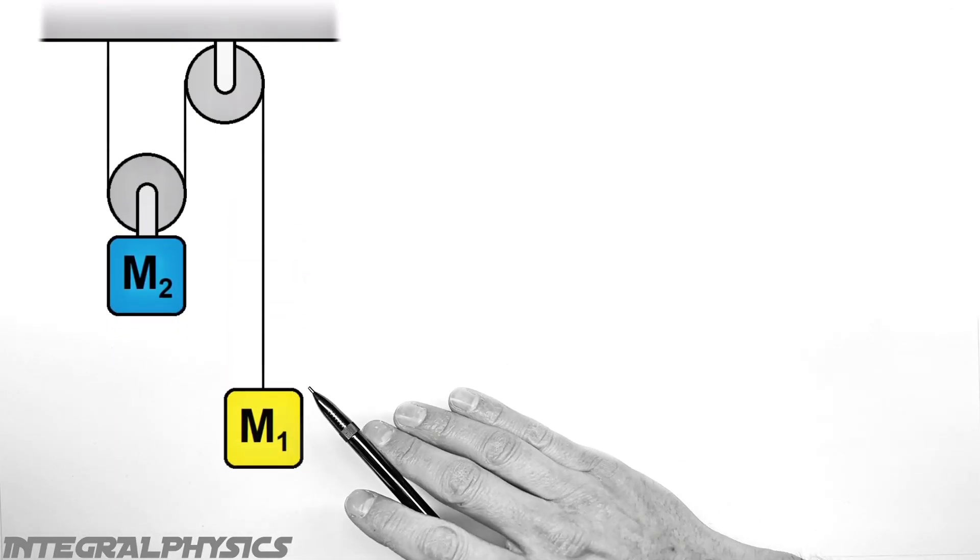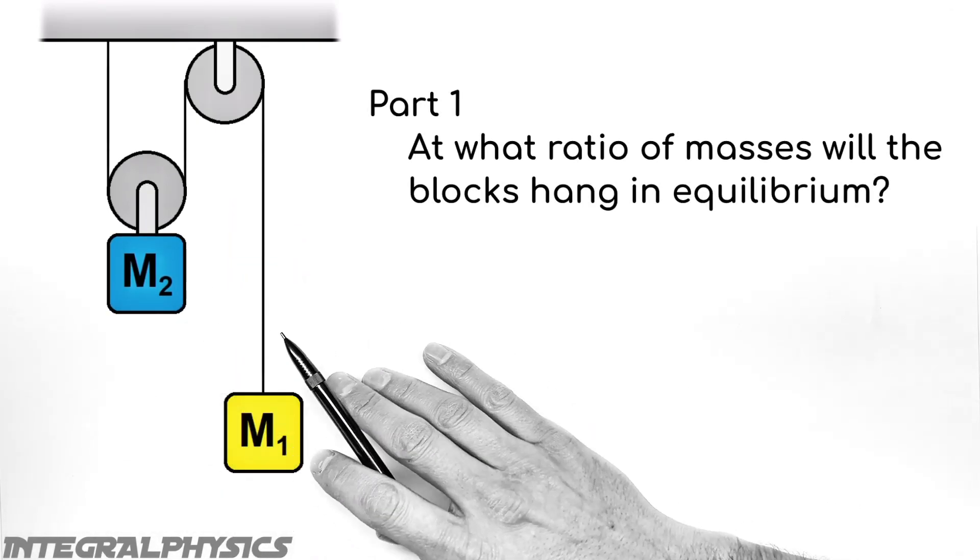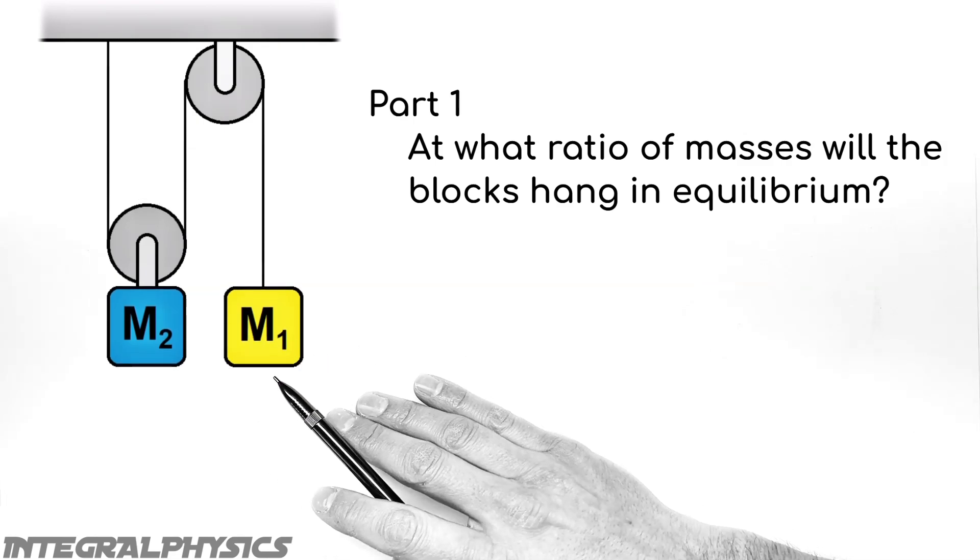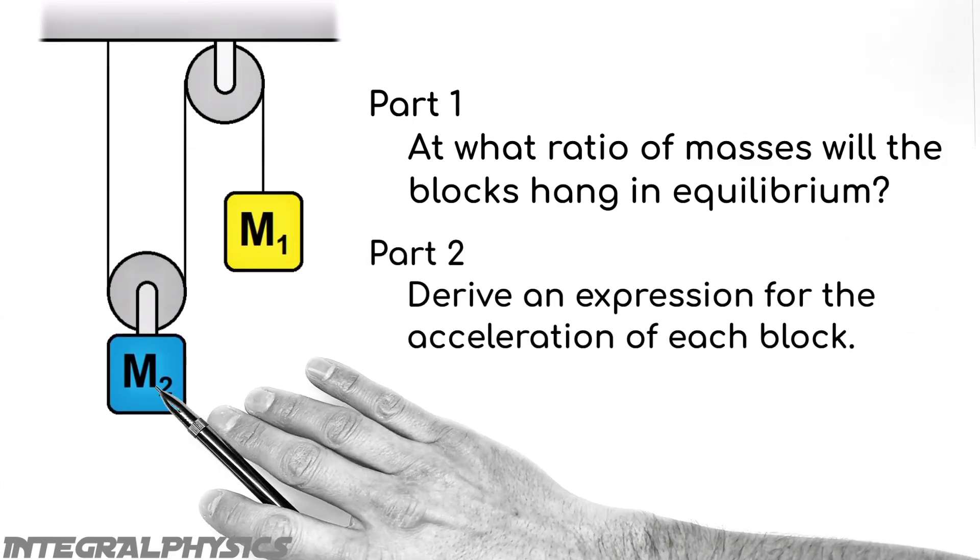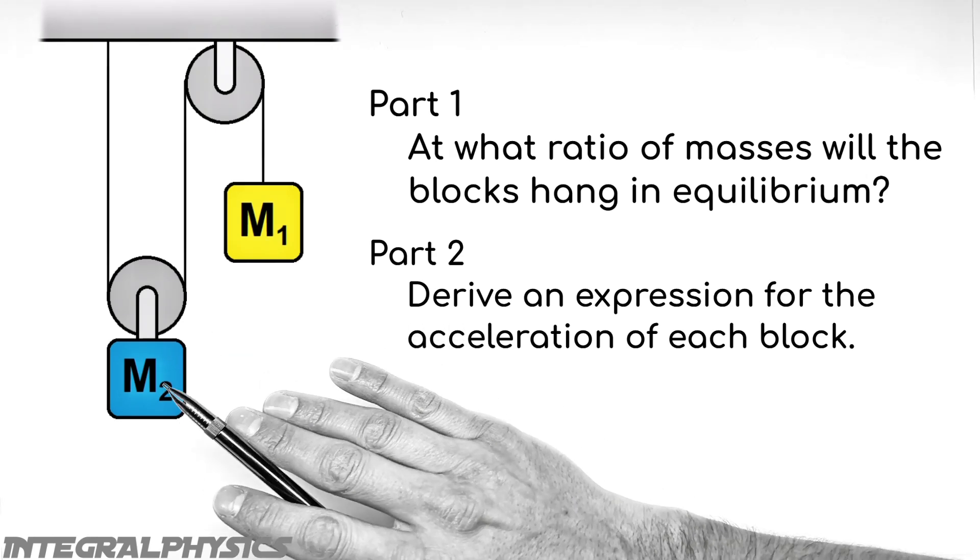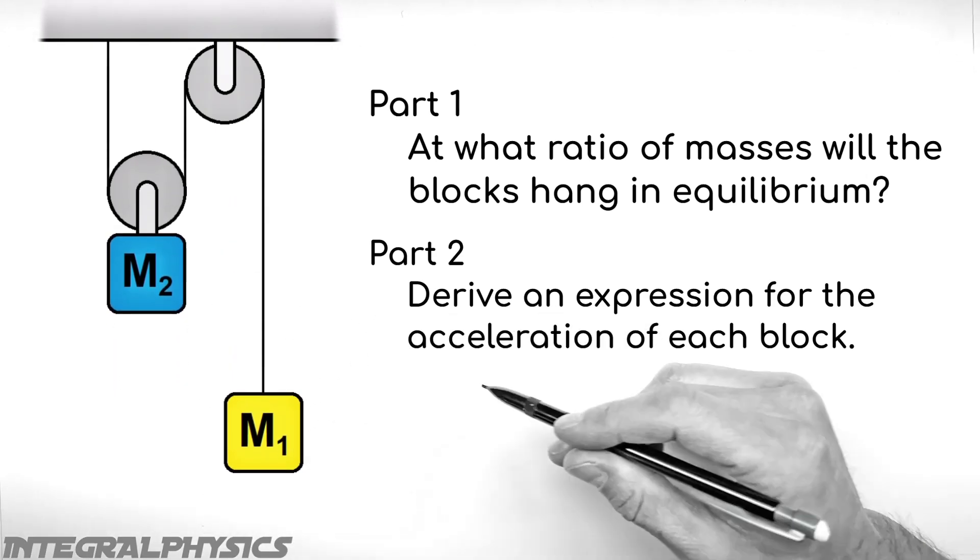Now what I want to do in this problem today is show you how to solve for the ratio of these two masses so that the system will hang in equilibrium. And I also want to derive an expression for you so that you can solve for the acceleration of each of these blocks when they aren't in equilibrium.